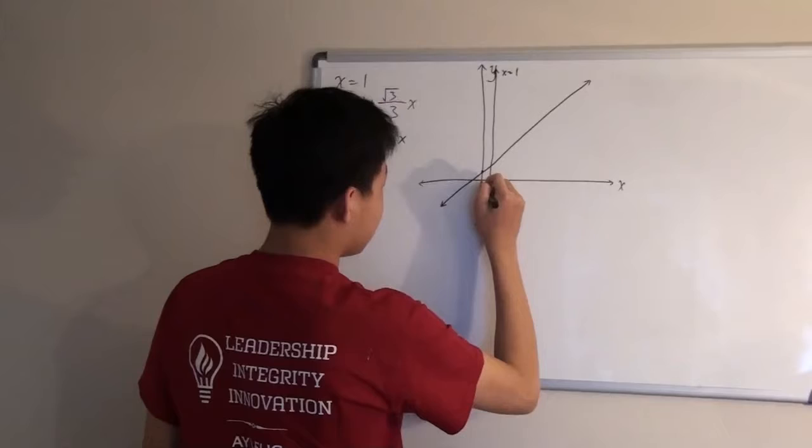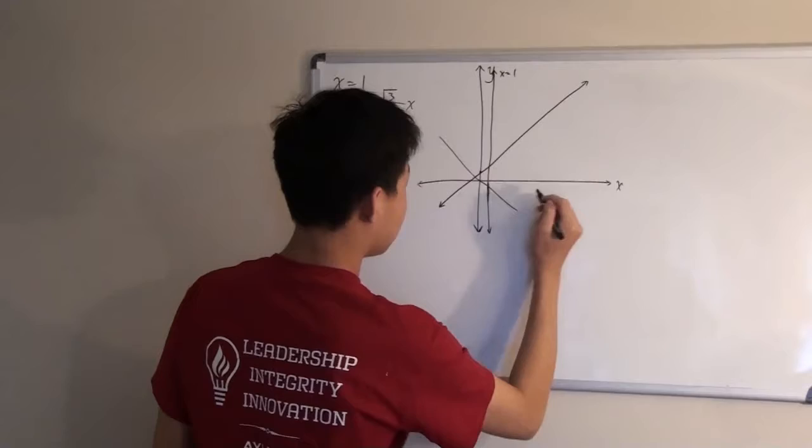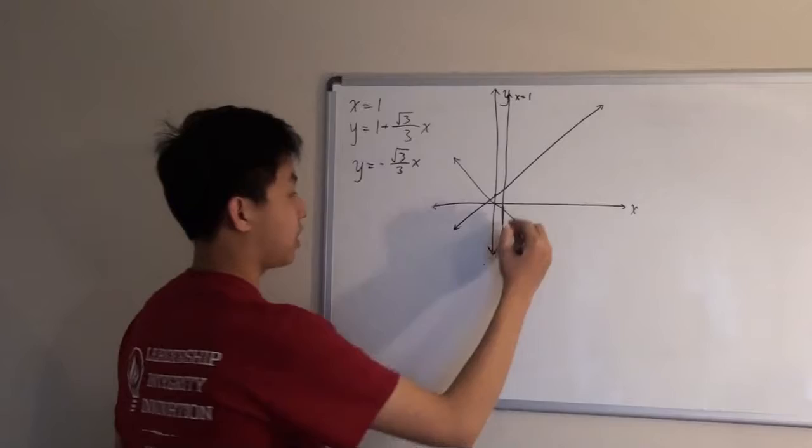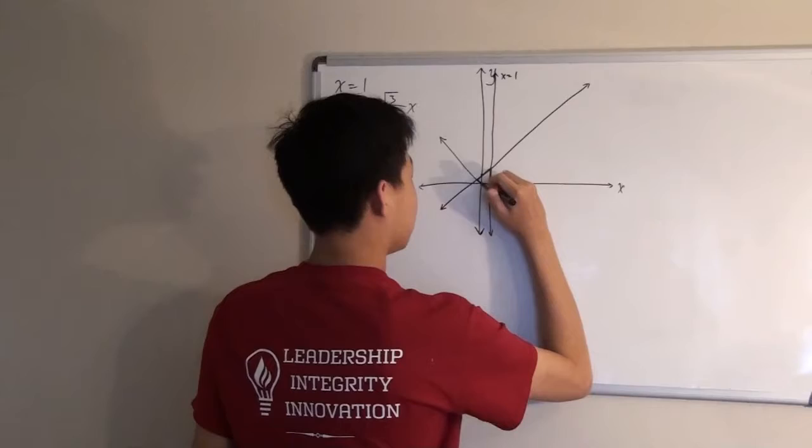So, if we plot that, we would get something like that, right? And so, our equilateral triangle would be right here.